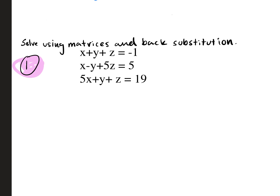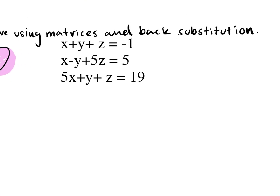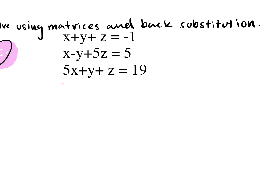Number one says solve using matrices and back substitution. If the directions say this on the test, you have to solve it this way. Let's start by putting it in a matrix. My first row of the matrix would be: one, one, one, negative one. Second row: one, negative one, five, five. And the third row: five, one, one, nineteen.